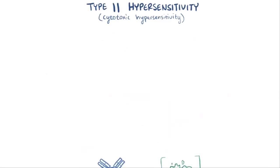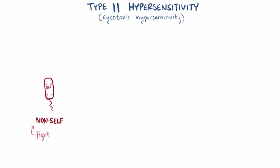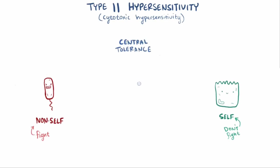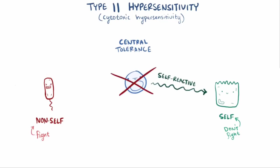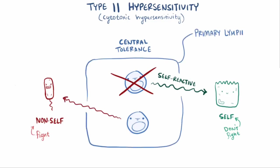Our immune system is set up to fight anything that's considered non-self. This works in large part because of a process called central tolerance, which is when developing immune cells that are self-reactive get destroyed or inactivated, whereas immune cells that aren't are allowed to survive. This happens while they're still in their primary lymphoid organs, which is the thymus for T-cells and bone marrow for B-cells.